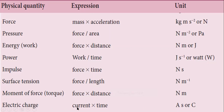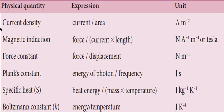Electric charge is current into time. Current has unit ampere, so the unit is ampere second. Another unit for electric charge, named after the scientist, is Coulomb, symbol C. Current density is current by area. Current is ampere and area is meter squared, so the unit is ampere per meter squared.